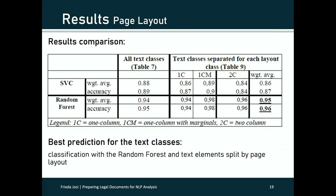In order to compare the results directly, the accuracy values for the text elements split by page layout were added as a weighted average. By splitting by page layout, the classification with the support vector classifier becomes slightly worse from 88% to 87%. But the classification with the random forest improves slightly from 95% to 96%. The classification with the random forest and text elements split by page layout is our best prediction for the text classes.